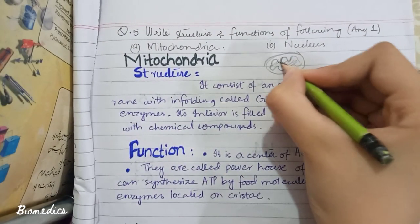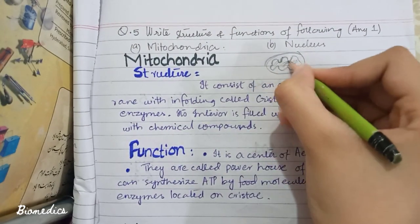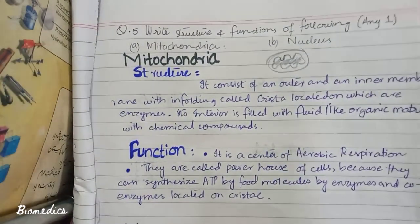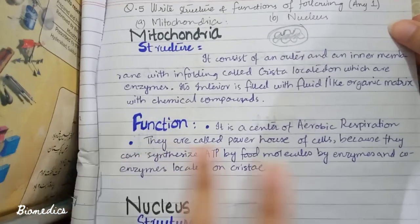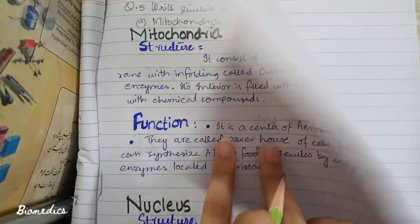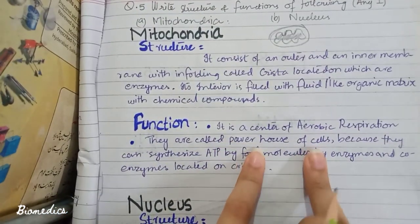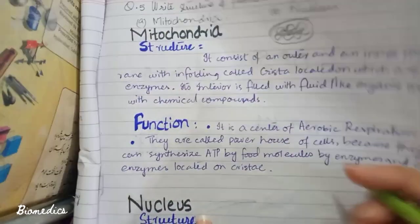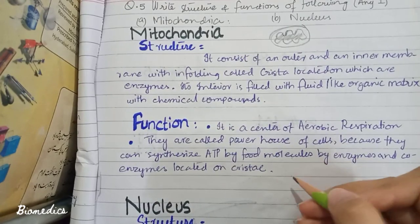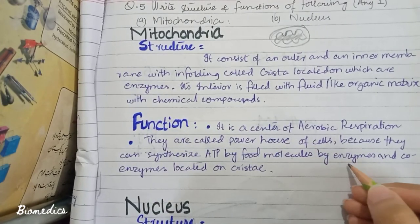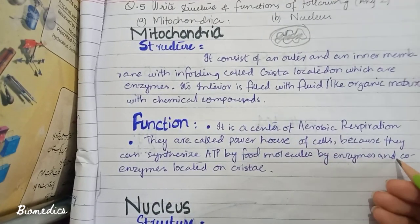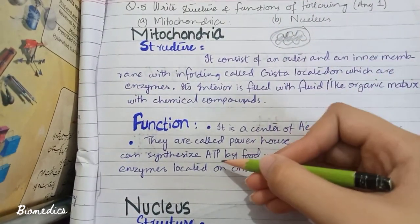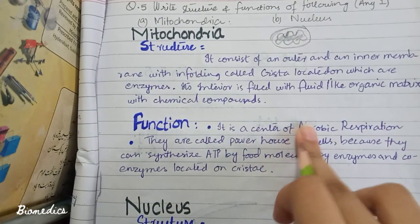The matrix contains enzymes and co-enzymes as well as different chemicals. Mitochondria are called the powerhouse of the cell because they generate ATP. Enzymes and co-enzymes located inside the cristae help break down food molecules through metabolic reactions to generate ATP, which is also called aerobic respiration.